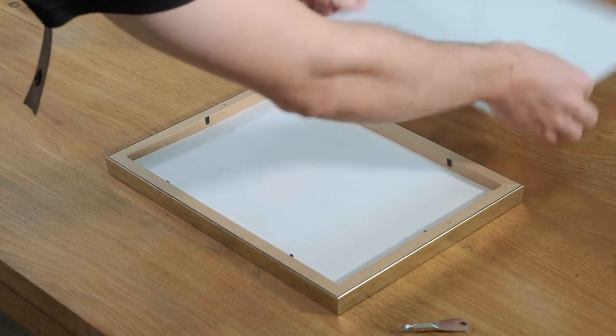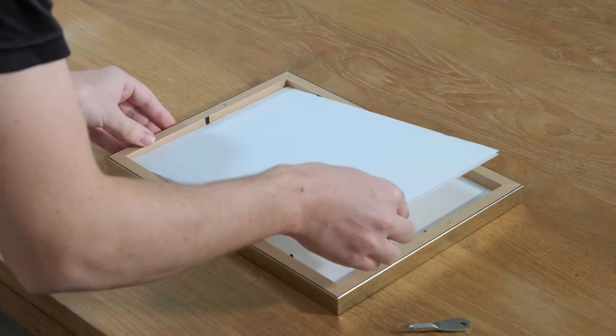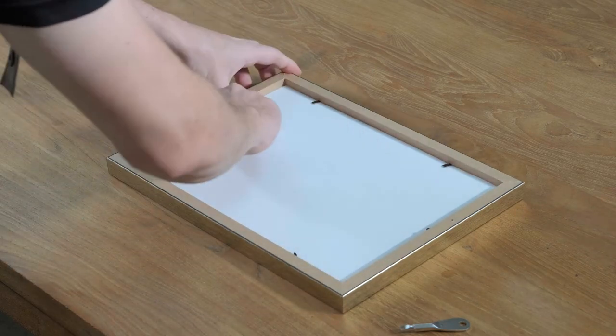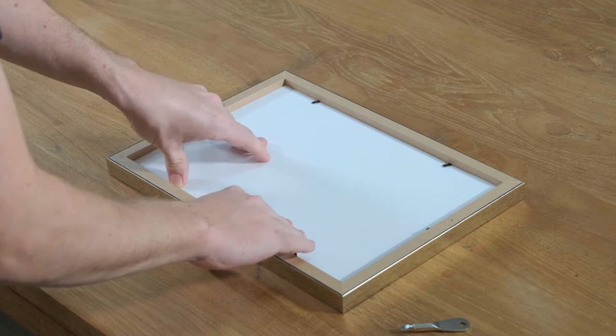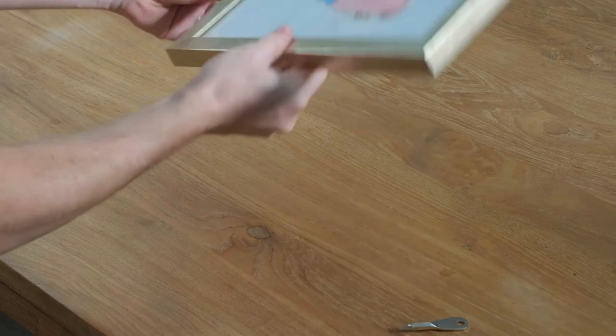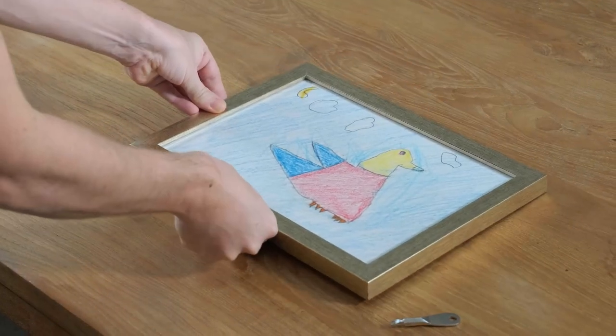Check that all the black flexi tabs are pressed down, then place the backing board back into the frame. Squeeze the black flexi tabs down tightly against the backing board. Now we can see that it fits perfectly.